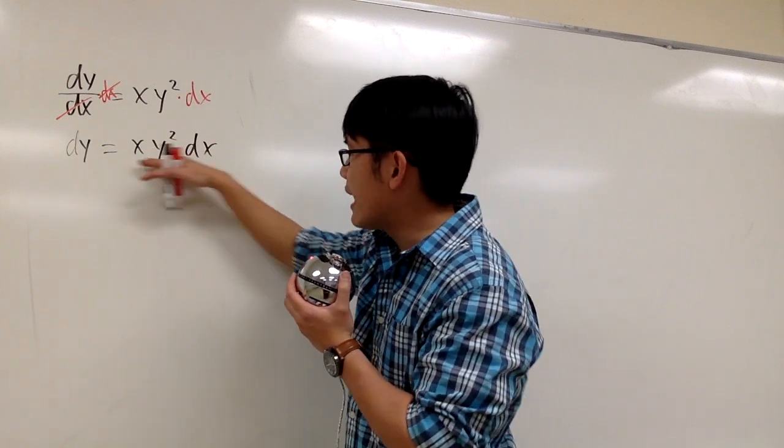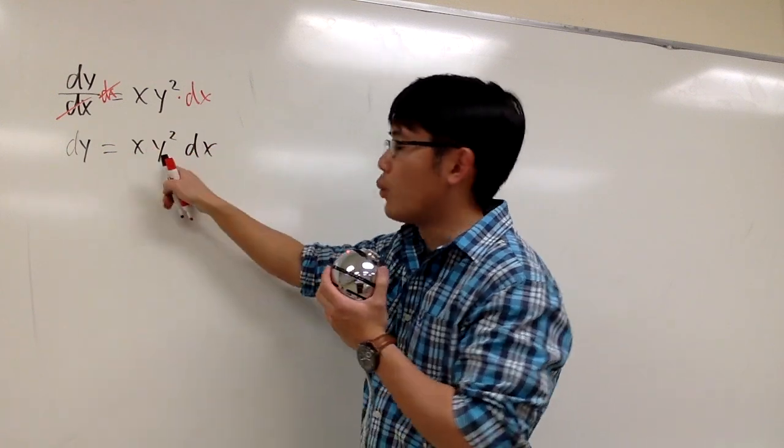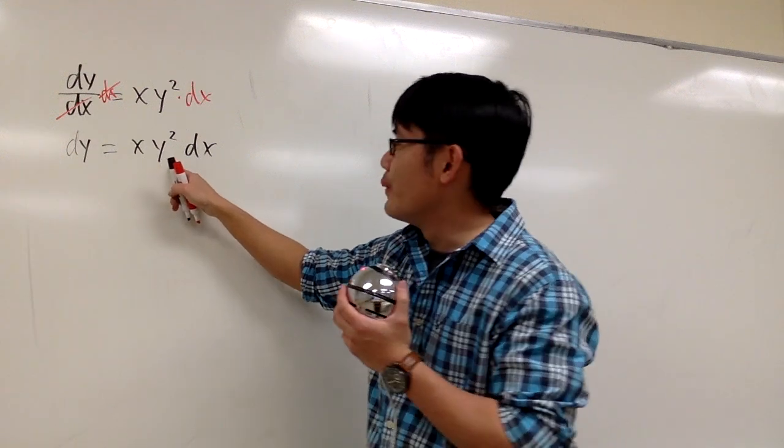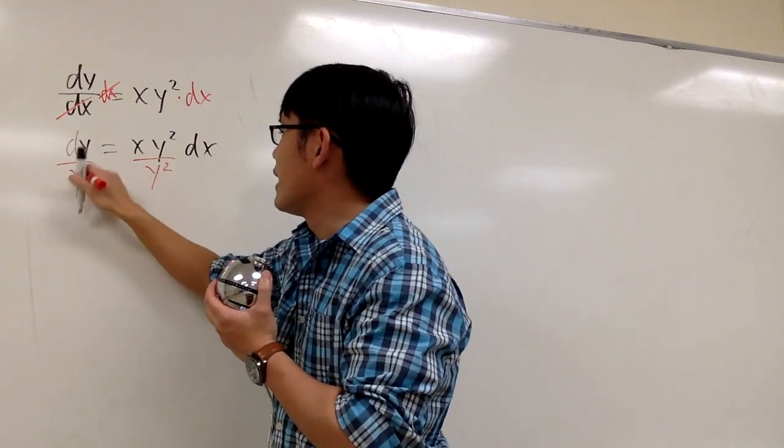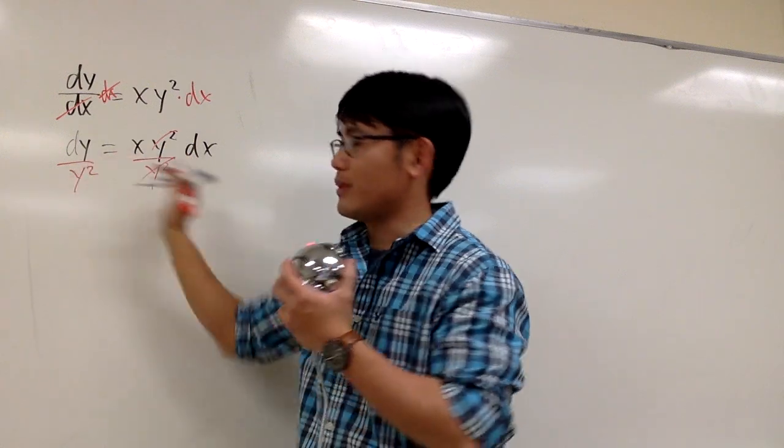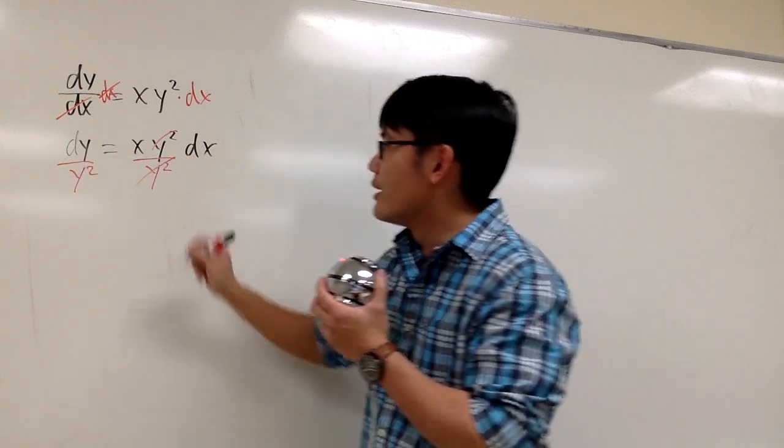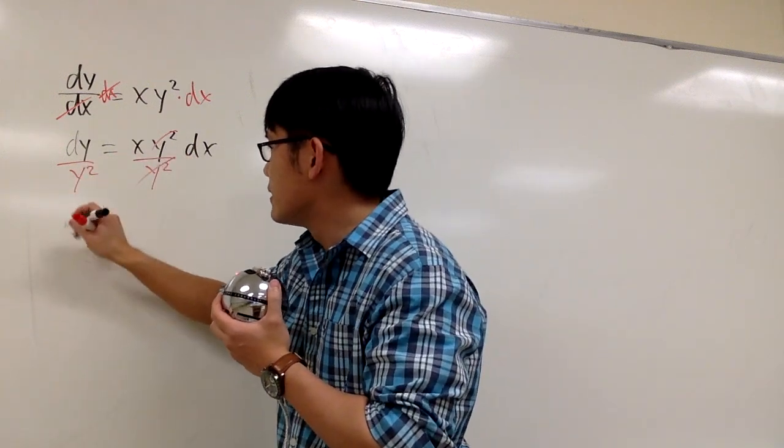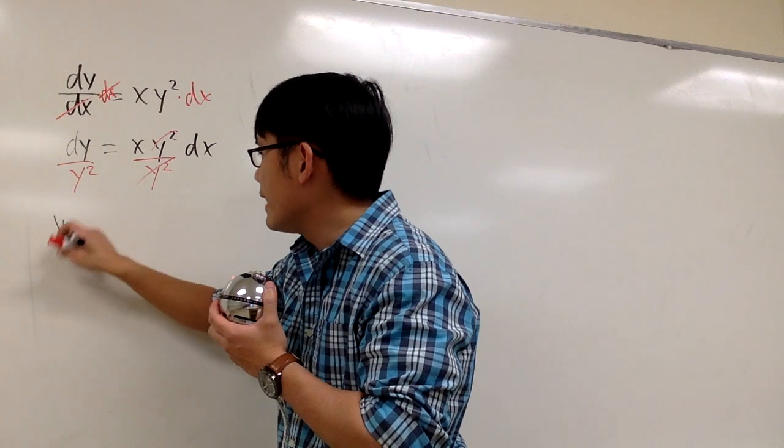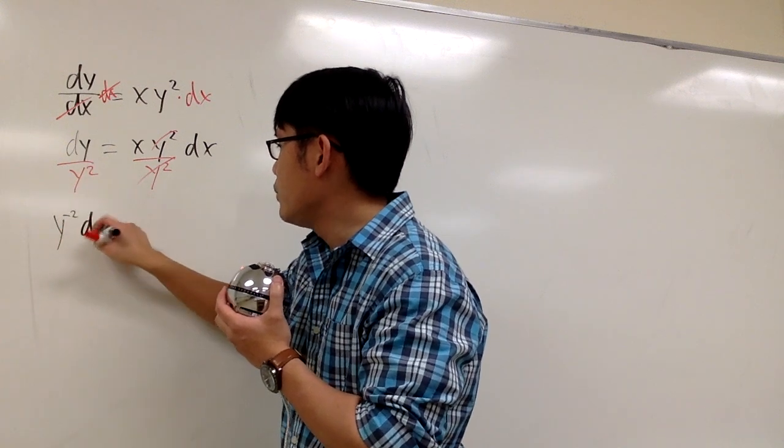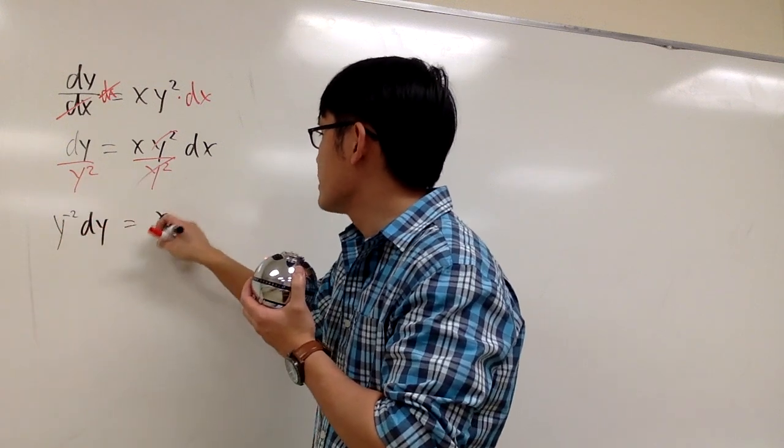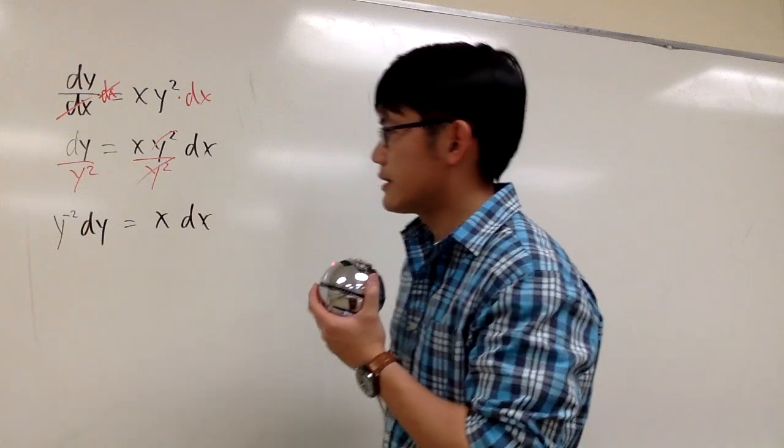On the right-hand side, this is the x world. The y is not invited. But then we can divide both sides by y squared, so now they found the right places to go. So right here, we can look at this as y to the negative 2, and then we have the dy, and this is equal to x dx.